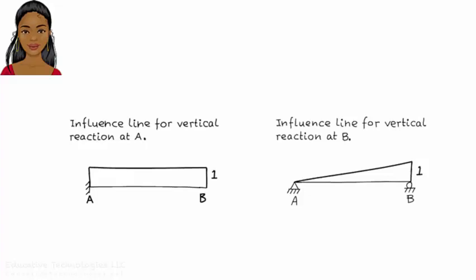What makes the shape of the influence line different in these two cases is the support condition at the other end of the beam segment. In the case of the cantilever beam, the other end of the segment is free.